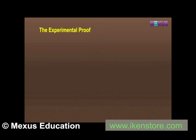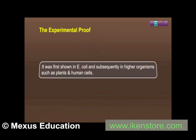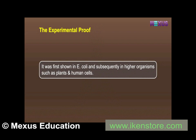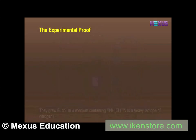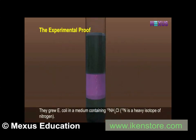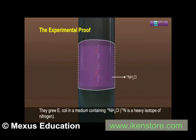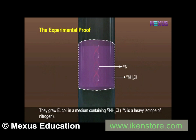The Experimental Proof. It was first shown in E. coli and subsequently in higher organisms such as plants and human cells. Matthew Meselson and Franklin Stahl performed the experiment in 1958. They grew E. coli in a medium containing 15-NH4Cl, which is a heavy isotope of nitrogen.